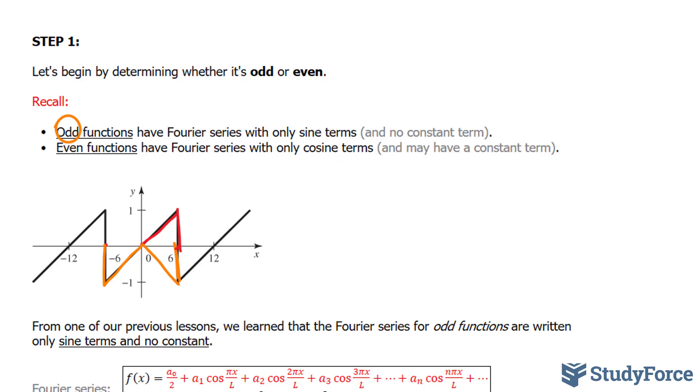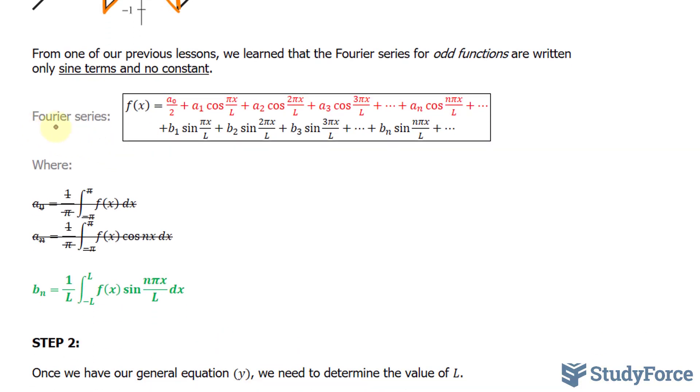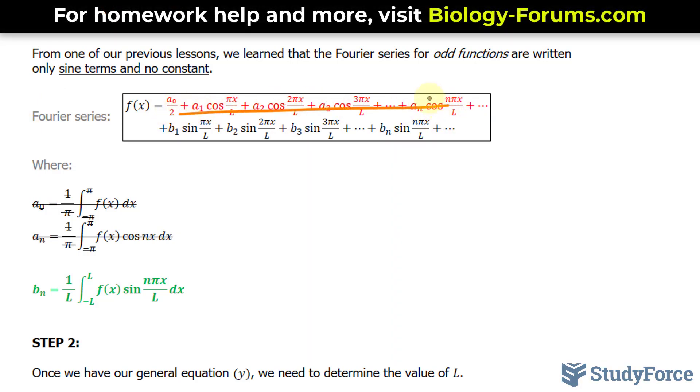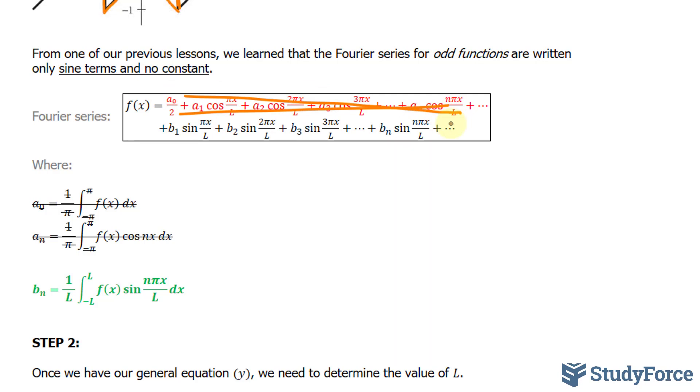With that being said, going back to what was represented as the general formula for a Fourier series, everything that you see in red is no longer applicable to the waveform. So our Fourier series will begin to shape up like this. And notice that I've cancelled these two out because all the a sub 0 and a sub n terms are gone. This is what we're going to work with.